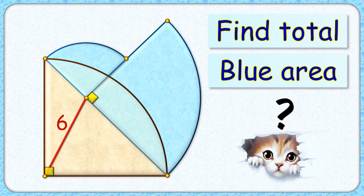Welcome to this interesting question. Given our three quadrants — one brown quadrant and two blue quadrants — the distance between the center of the brown quadrant and the blue quadrant is six centimeters. With this limited information, we have to find the total area of these blue quadrants.